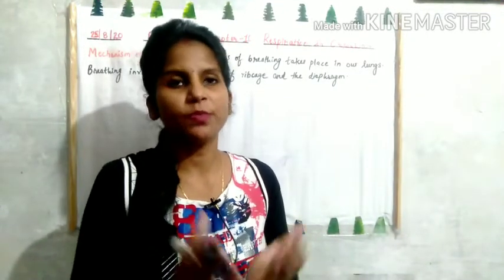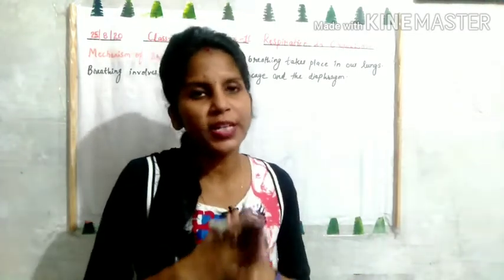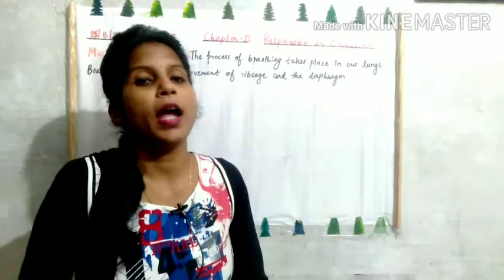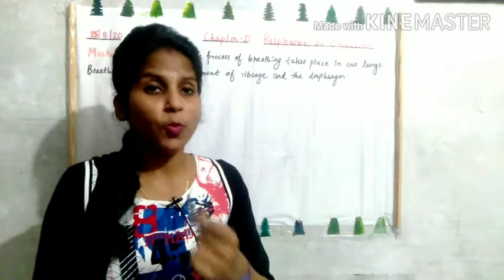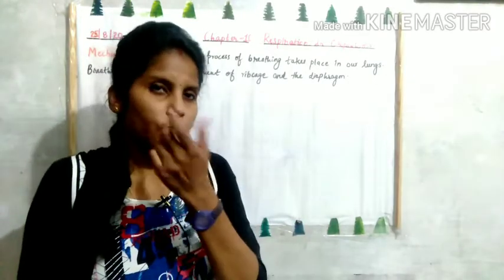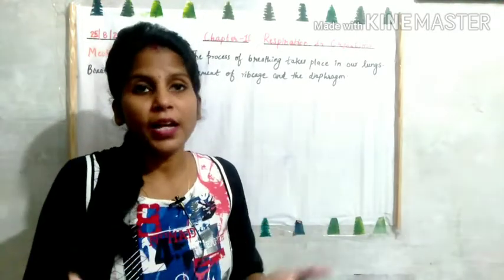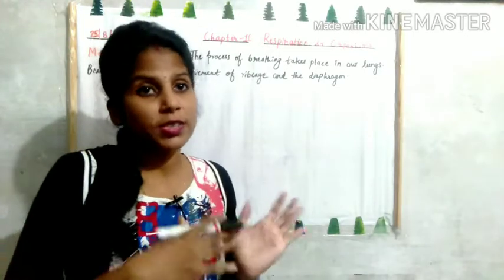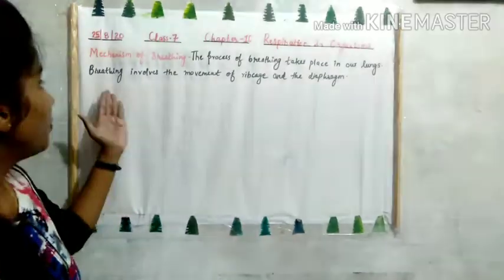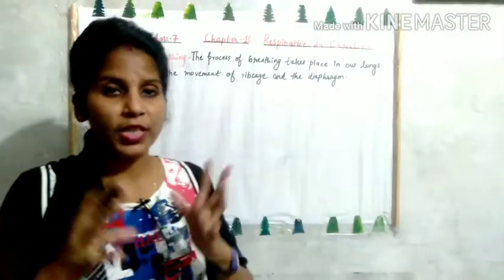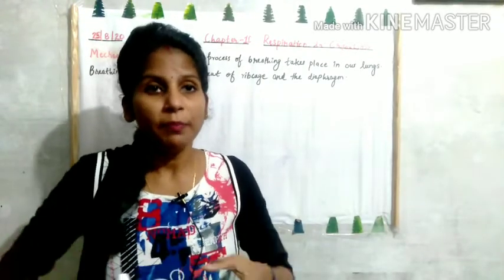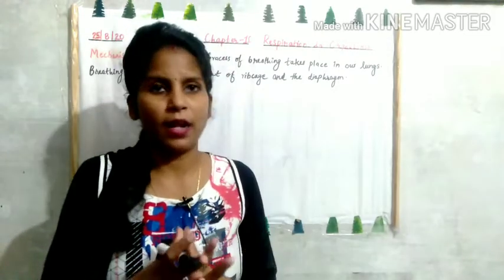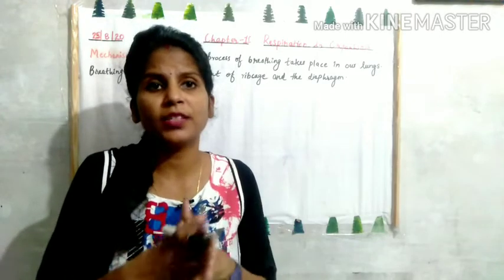Now we will see how breathing occurs — the mechanism of breathing. The process of breathing takes place in our lungs. We breathe with the help of our nose. If I close my nostrils for some time, I will feel uneasy and uncomfortable, and when I remove my hands I will breathe more deeply to compensate. Breathing involves the movement of the rib cage and the diaphragm. We will study this with the help of a diagram.